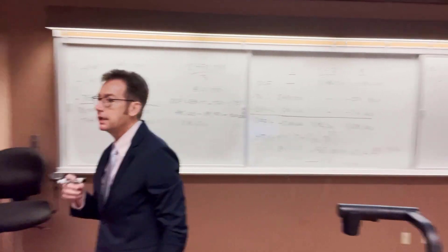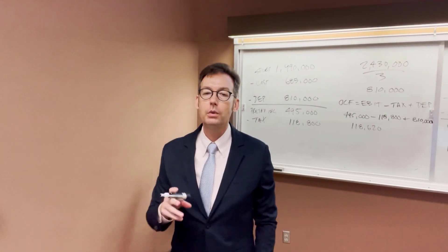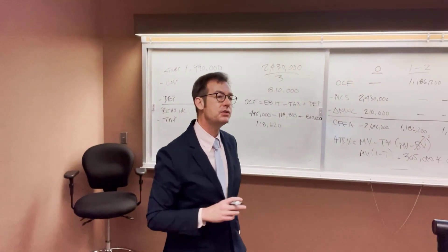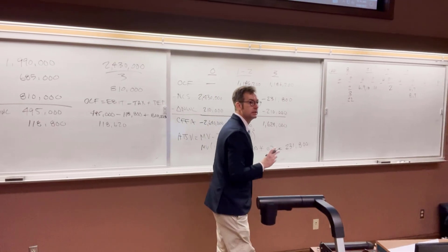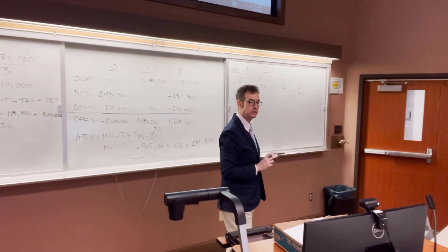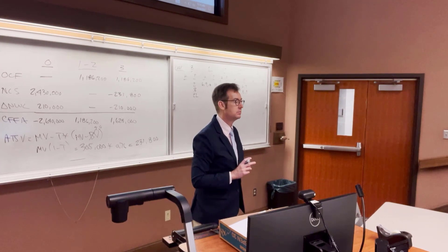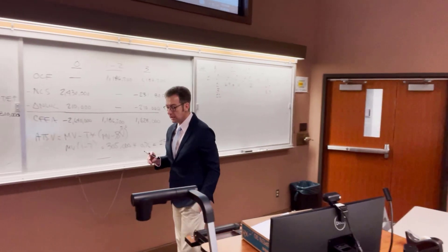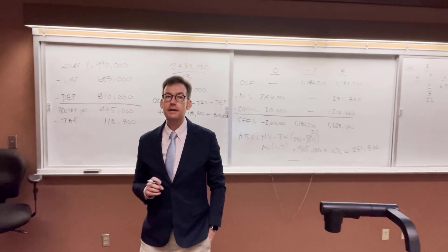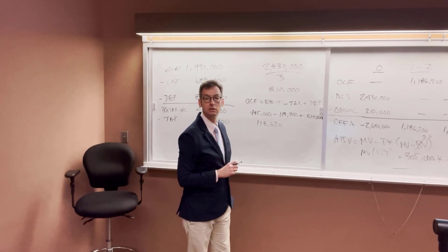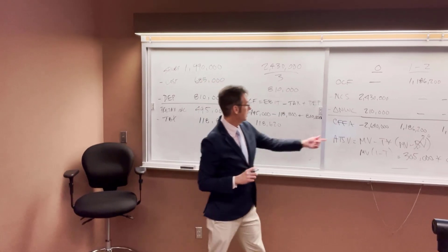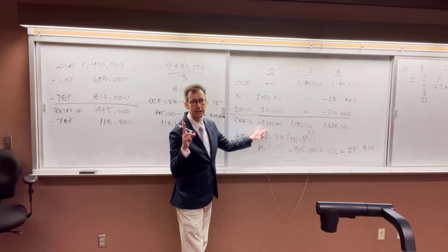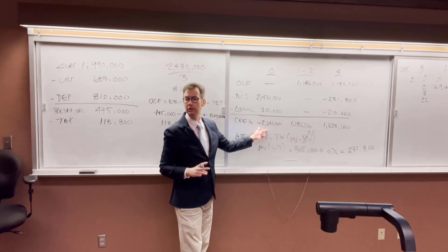Now we have all these numbers and can find net present value on the calculator. Hit CF, Second, Clear Work. Enter CF zero as negative $2,640,000. Arrow down to C01 and enter $1,186,200, then hit Enter. Arrow down — F01 equals two, because years one and two have the same cash flow. Hit Enter.